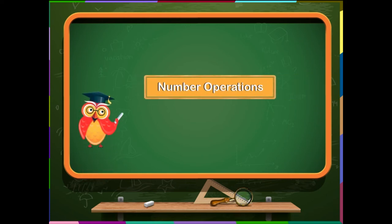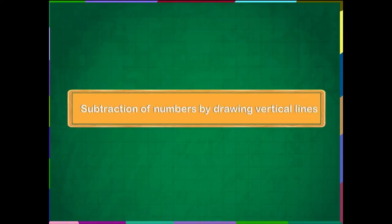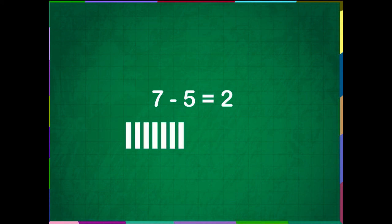Number Operations 2: Subtraction of Numbers by Drawing Vertical Lines. We can subtract numbers more easily by drawing vertical lines below the first number and cutting the lines as much as the second number. The lines that are not cut or crossed is the difference.